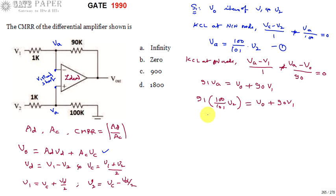Now V1 and V2 are going to be replaced with these equations. V1 is VC plus VD by 2, V2 is VC minus VD by 2. So substitute V1 and V2 with these equations.